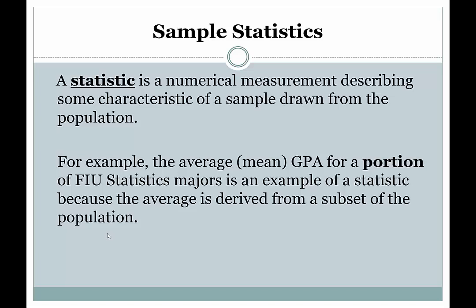The difference between statistics and parameters is essentially the difference between where they come from. Remember: sample and statistic go together — two S's. Statistics come from samples, and parameters come from populations — P and P. Parameters come from populations; statistics come from samples.